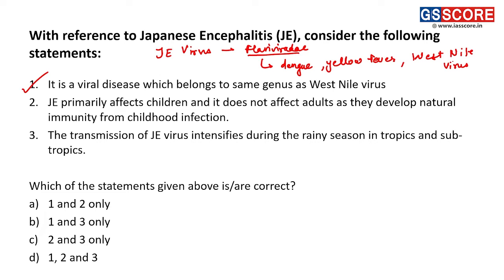Second statement: Japanese encephalitis primarily affects children and does not affect adults, as they develop natural immunity from childhood infection. This statement is incorrect. Though JE primarily affects children, that does not mean people of other ages are immune. Individuals of any age can be affected by Japanese encephalitis.